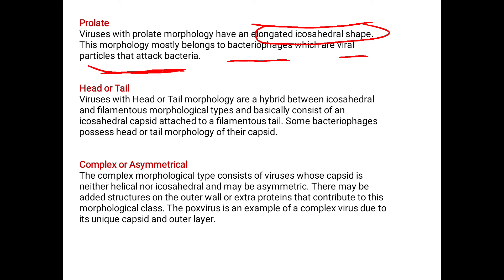Next is the head or tail morphology. Viruses with head or tail morphology are a hybrid between icosahedral and filamentous morphological types — that is, intermediate between the icosahedral and helical form. This basically consists of an icosahedral capsid attached to a filamentous tail. Some bacteriophages possess this head or tail morphology.